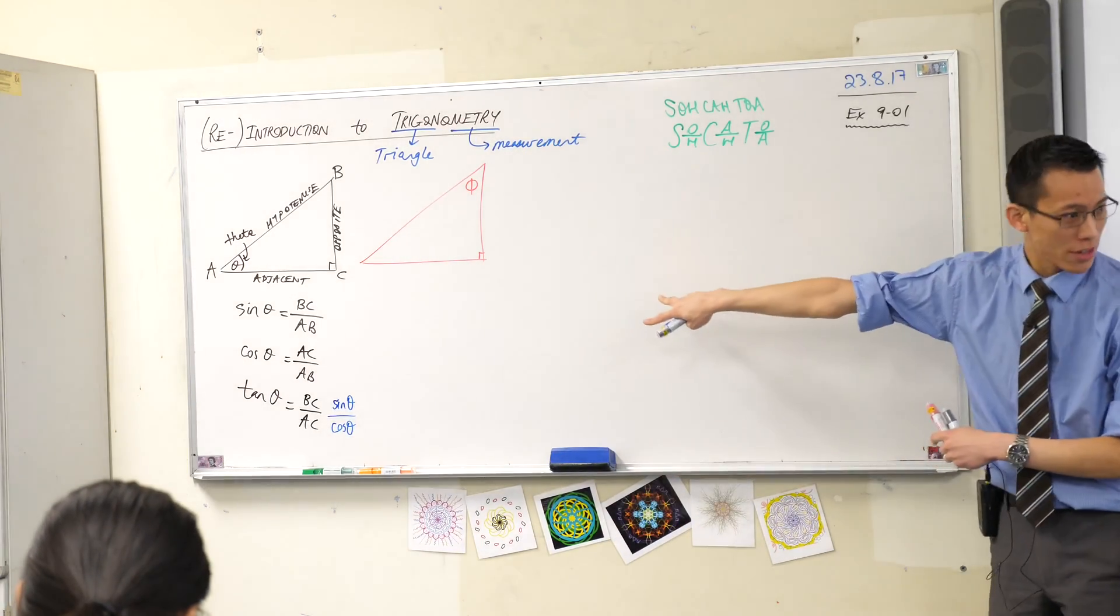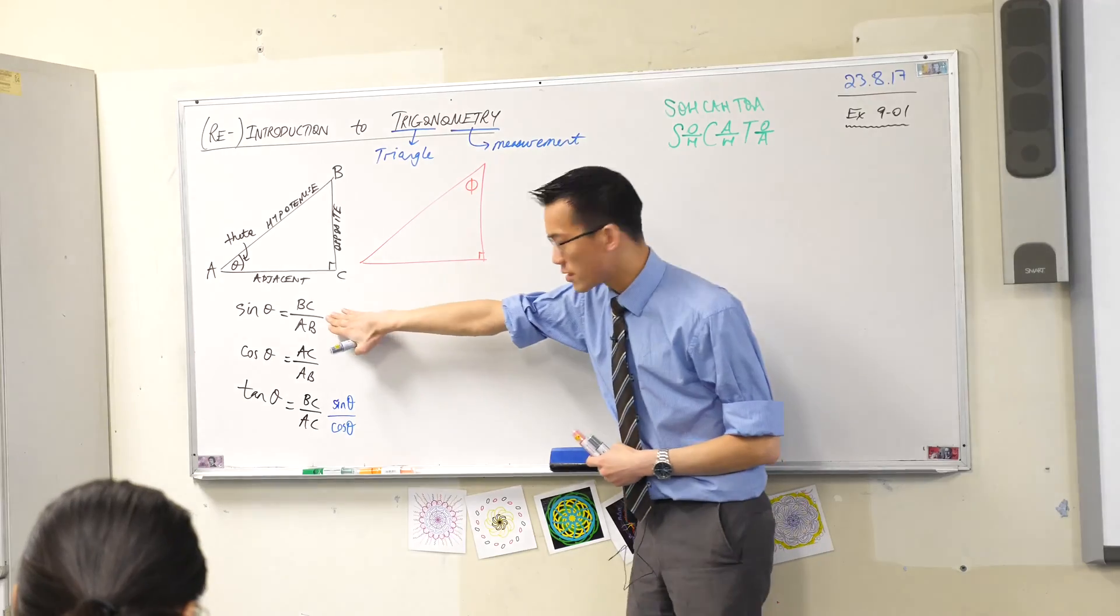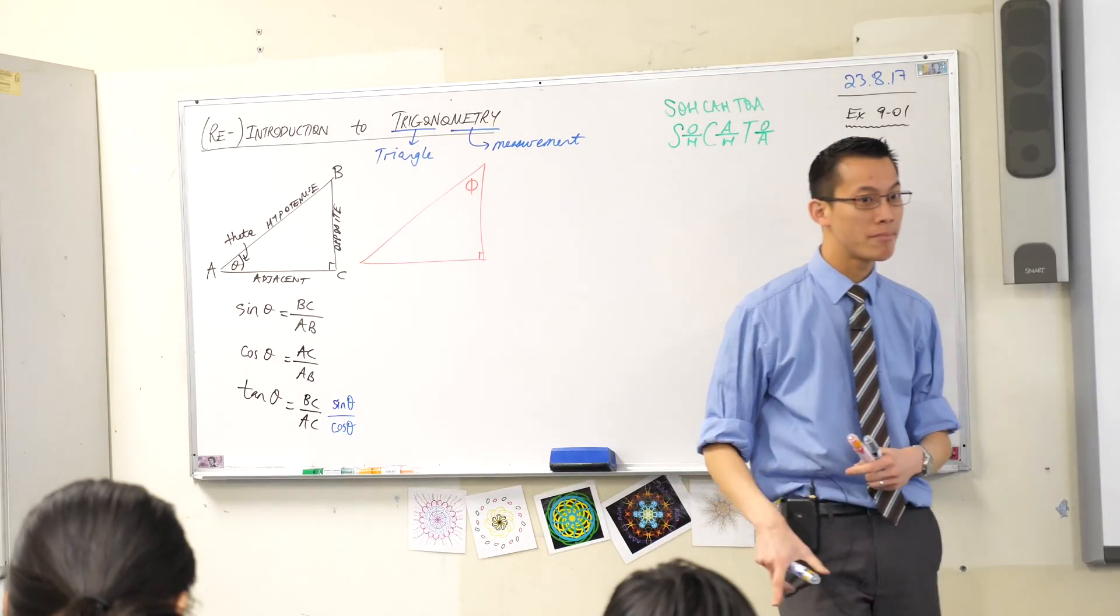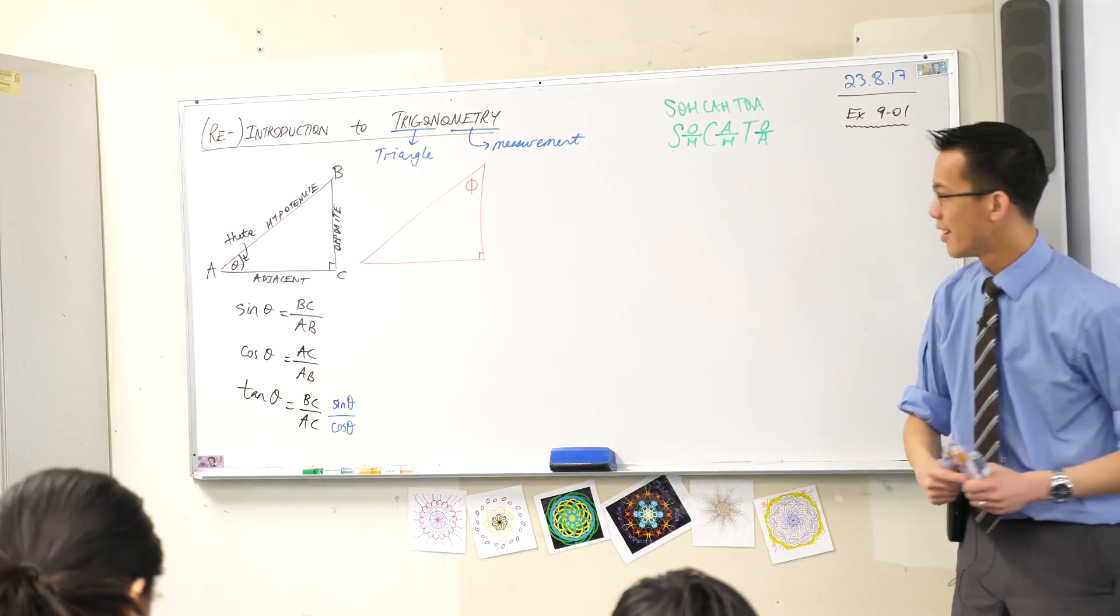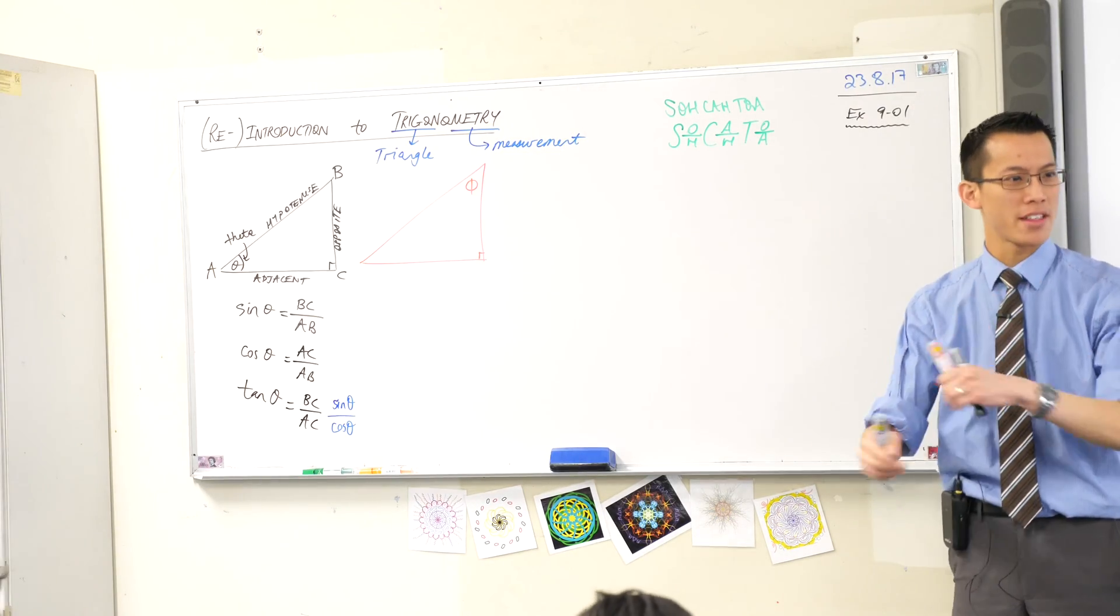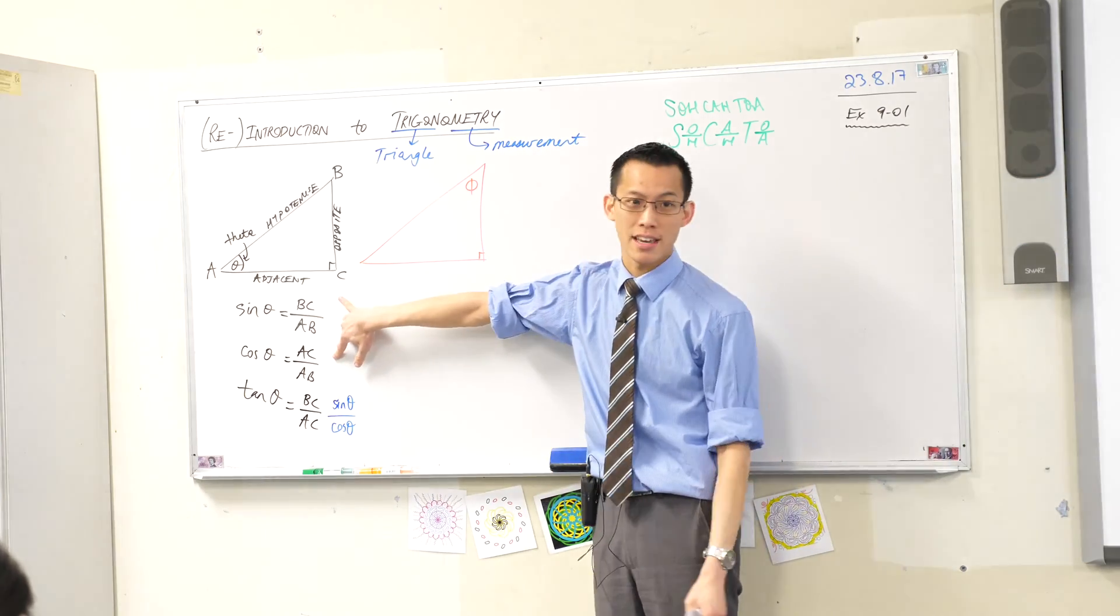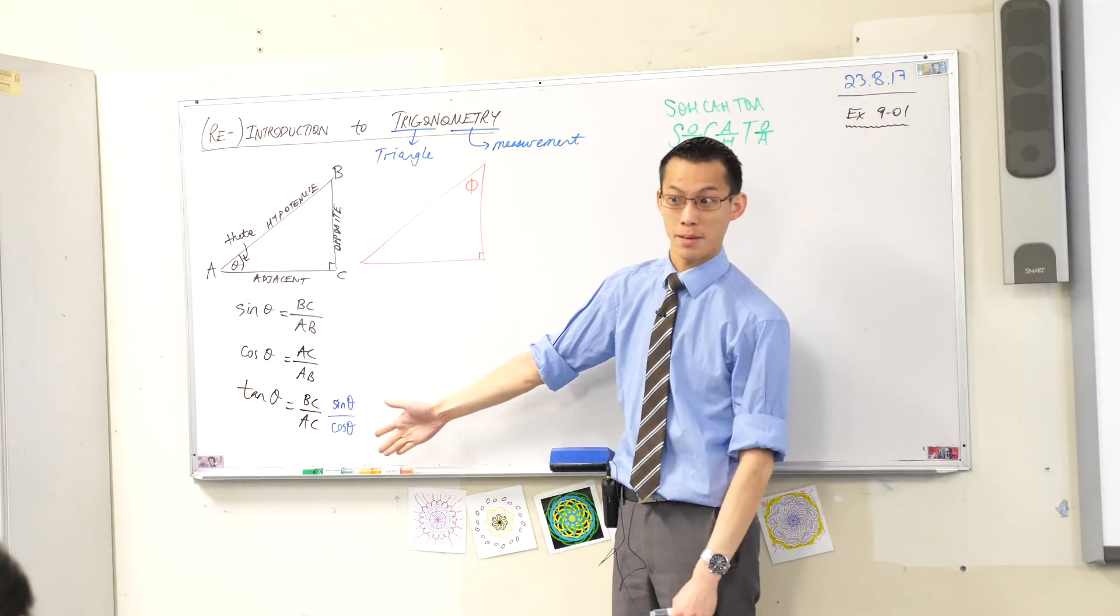I want to also point out at this moment that while we can think about tan as opposite on adjacent, you can also think about tan as sin theta on cos theta. Did you notice that? Have a look at the top two fractions there. If you did sin theta on cos theta, see how they both have AB on the bottom? They both have AB on the denominator. So therefore, if you divided one by the other, ABs would both disappear. They'd cancel each other out, leaving you with BC on AC, just like you saw in the first place.